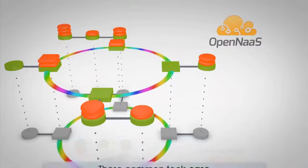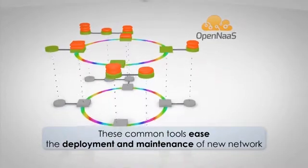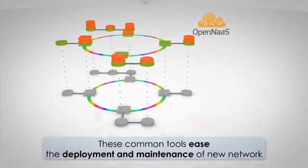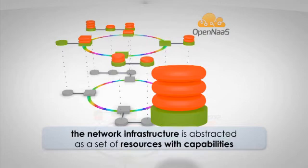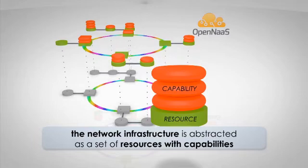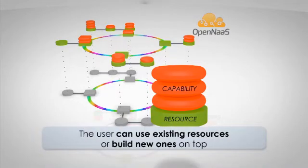These common tools ease the deployment and maintenance of new network management innovations. In this lightweight operational model, the network infrastructure is abstracted as a set of resources with capabilities. Resources are developed for common elements such as optical switches and routers, IP networks, bandwidth on demand domains, etc. The user can use existing resources or build new ones on top.